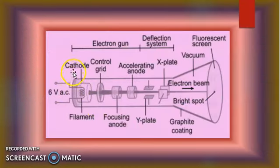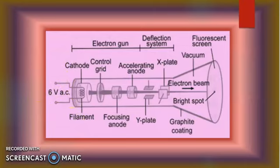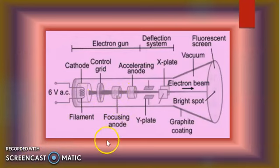Let's look at the diagram. This is our cathode, which contains a filament. We heat up the filament — there is a 6-volt battery — so the filament heats up, acting as a heater, and negative charges are emitted. We have installed a control grid, which controls the amount of electrons. Then we have the next electrode, which is the anode — the anode is positive and the electron is negative.